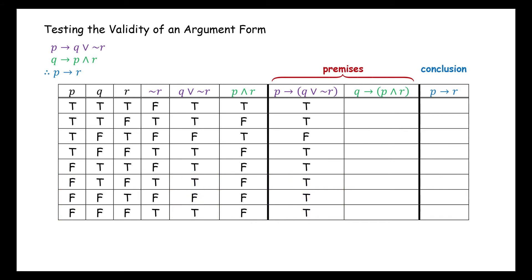And for the if Q, then (P and R) column, we have: true, false, true, true, true, false, false, true, true, true.